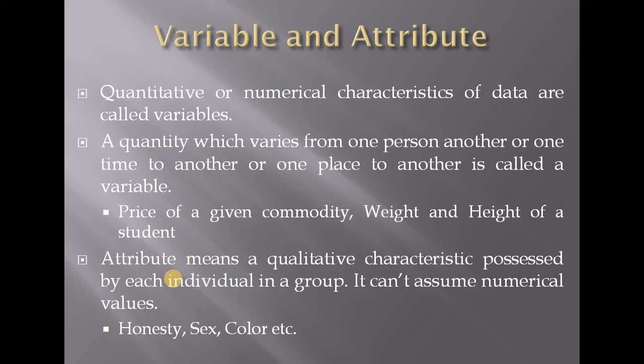An attribute refers to the qualitative characteristics possessed by each individual in a group. Unlike variables, attributes cannot assume numerical values — they are qualitative in nature. Examples of attributes include honesty, sex, and color — these are qualities that cannot be expressed as numbers.